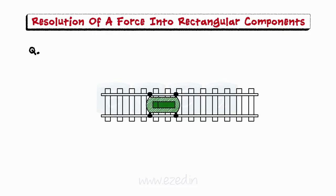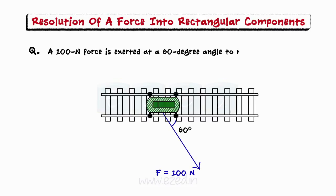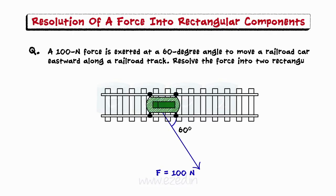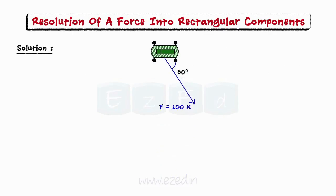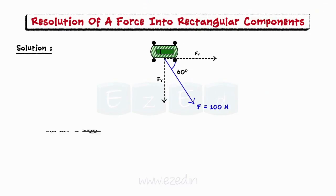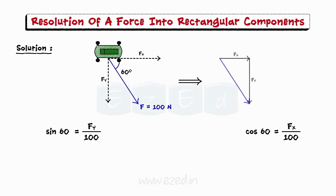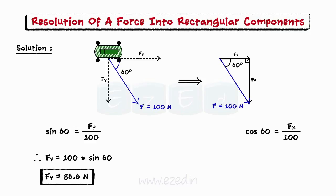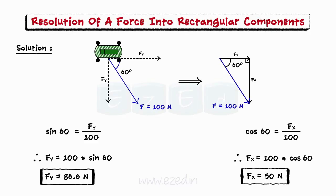A 100N force is exerted at a 60-degree angle to move a railroad car eastward along a railroad track. Resolve the force into two rectangular components. The force applied to the car has both a vertical (southward) and a horizontal (eastward) component. Since the force lies in the fourth quadrant in the coordinate system, the sine function is used to determine the vertical component and the cosine function for the horizontal component. The accompanying work is shown.